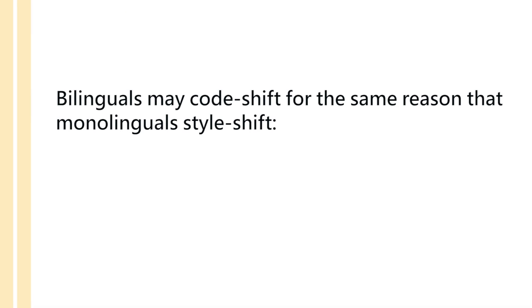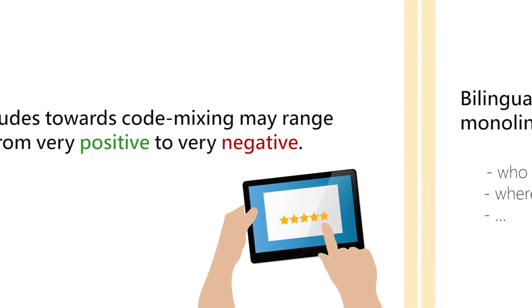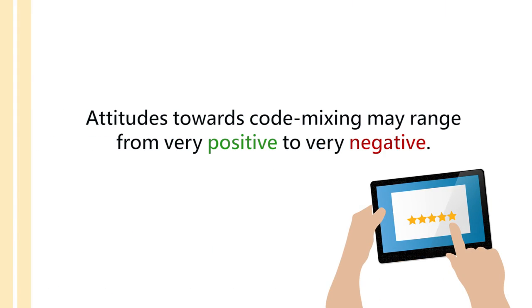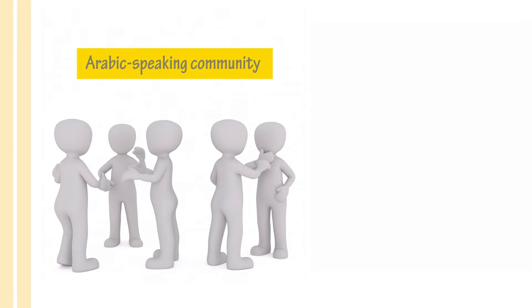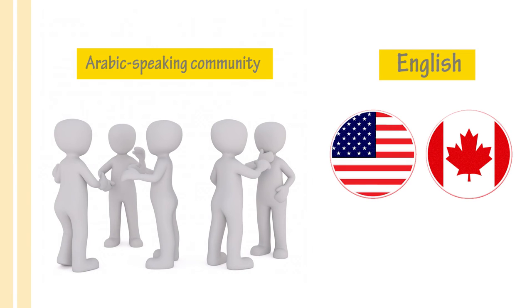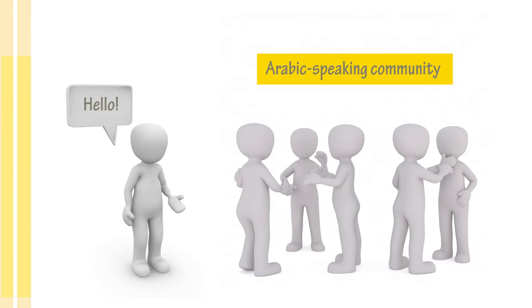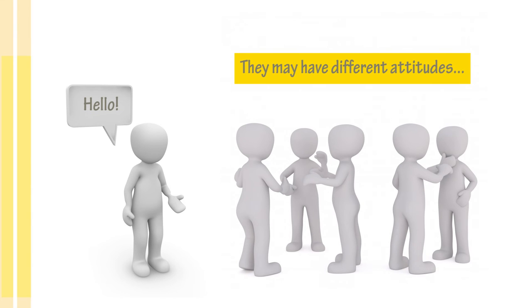A very interesting fact is that bilinguals code shift for the same reasons that monolinguals style shift — depending on factors such as who they're talking to and where they are. This involves another issue called language attitudes. When people code mix, there are different attitudes towards that behavior ranging from very positive to very negative. For example, in an Arabic-speaking community living in the US or Canada, when someone mixes English elements into their Arabic, community members may have various attitudes toward that linguistic behavior.